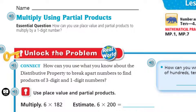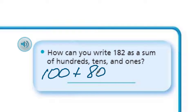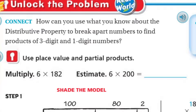This actually sounds like a bit of a review. It says: how can you write 182 as a sum of hundreds, tens, and ones? Well, of course, this is like expanded form when you think about it. If the hundreds is 100, wouldn't we just say 100 plus 80 plus 2? This is the sum — will that equal 182? I believe so. So that's what we just did. We wrote 182 as a sum of hundreds, tens, and ones.